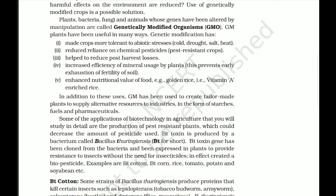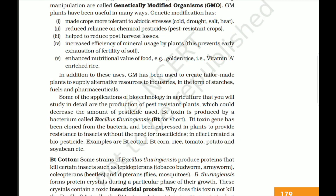Fifth, GM technology has enhanced the nutritional value of food — for example, golden rice, which is vitamin A-enriched rice. In addition, GM technology has been used to create tailor-made plants to supply alternative resources to industries in the form of starches, fuels, and pharmaceuticals. One important application is the production of pest-resistant plants to decrease the amount of pesticide used. Bt toxin is produced by the bacterium Bacillus thuringiensis (Bt), and the Bt toxin gene has been cloned from the bacteria and expressed in plants to provide resistance to insects.